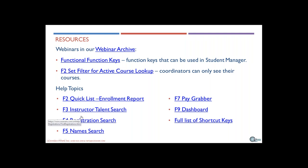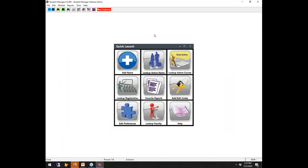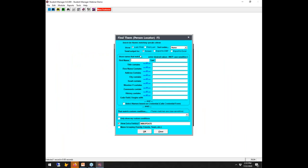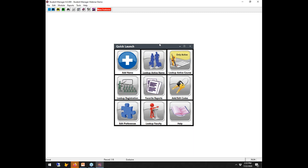While we wait, here are lots of other resources available on function keys — an older webinar that this one will replace, the F2 Set Filter option, and the help guide with quite a bit of detail. Now we have Vicky asking: 'I need to find all students with current registrations from a particular firm.' That's a good one — for example, has ACEware Systems had any employees register in the past year?